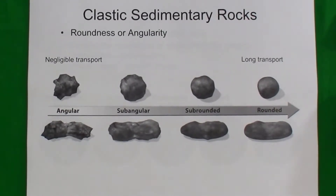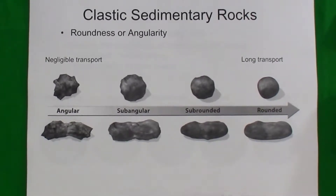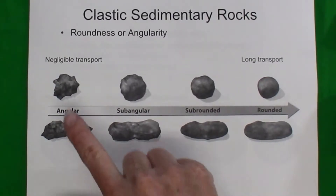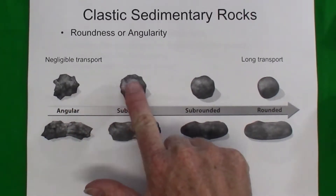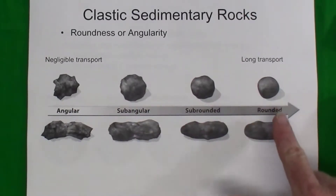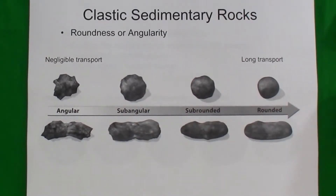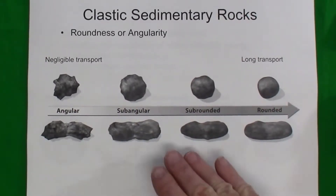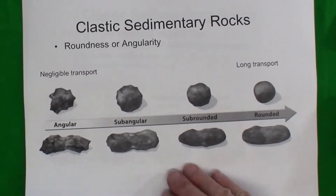Another thing we examine in clastic rocks is the roundness or angularity of the particles. If the particles have been transported a long distance, the sharp edges and corners become abraded off the rock, and it becomes more and more rounded with longer transport and more time.